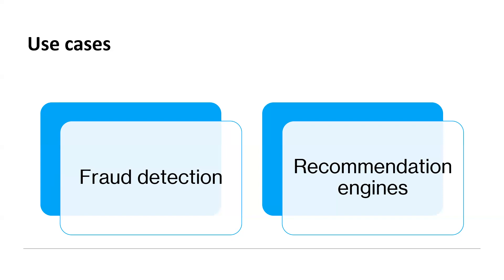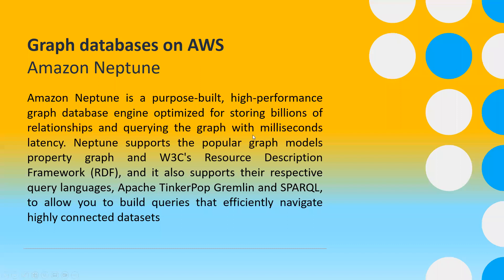Now, how do graph databases work on AWS? The service we use is Amazon Neptune. Amazon Neptune is a fast, reliable, fully managed graph database service that makes it easy to build and run applications that work with highly connected data sets. At its core, Neptune has a purpose-built, high-performance graph database engine optimized for storing billions of relationships and querying the graph with milliseconds latency. Amazon Neptune supports popular graph query languages: Apache TinkerPop Gremlin, W3C SPARQL, and Open Cypher.